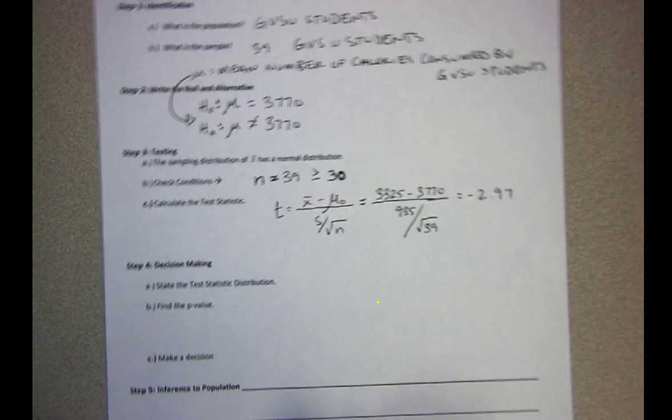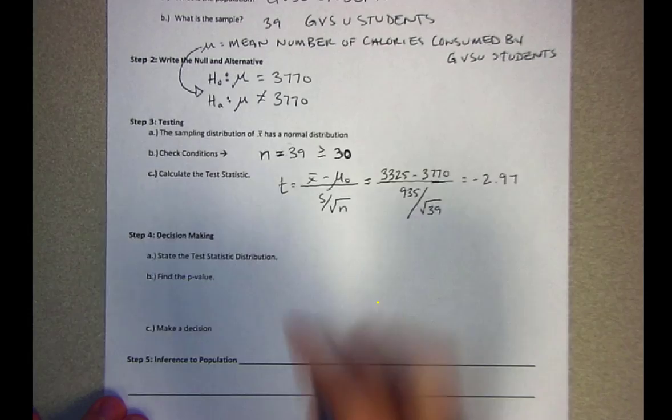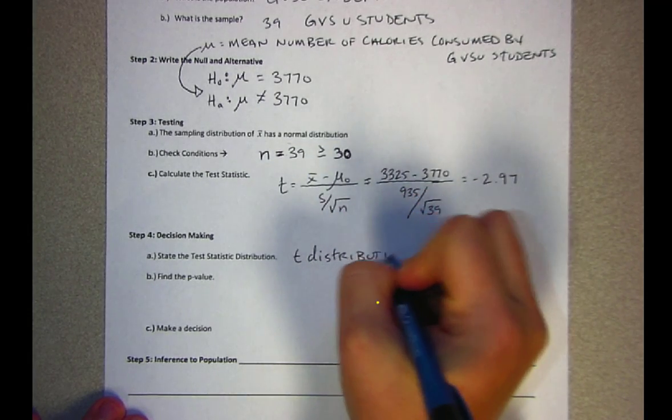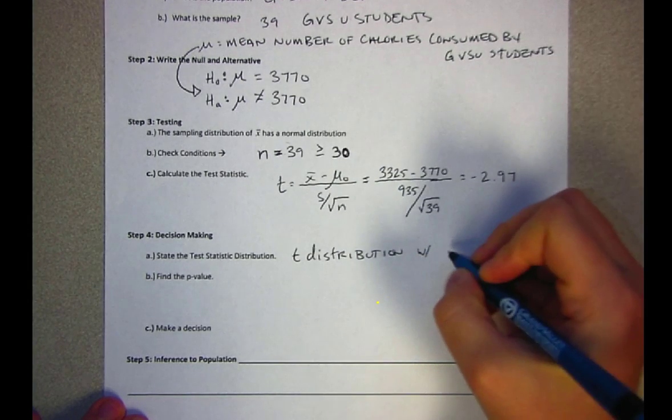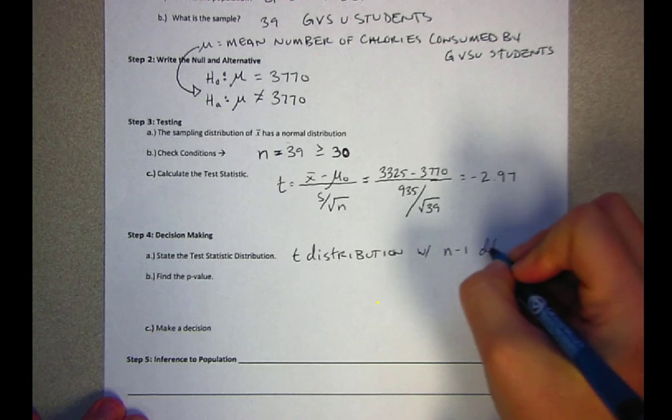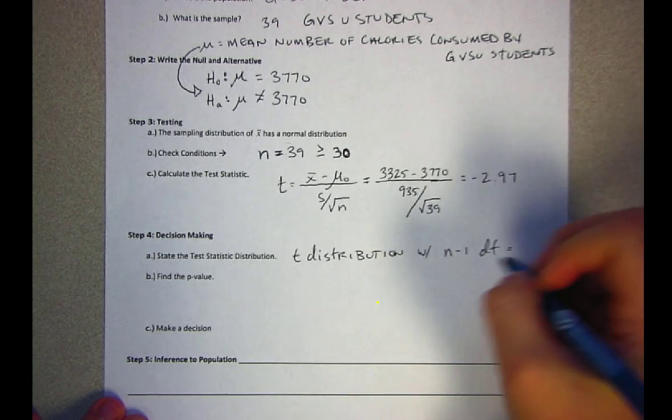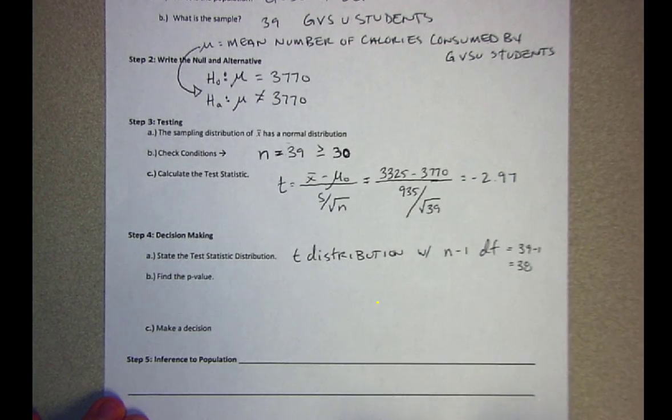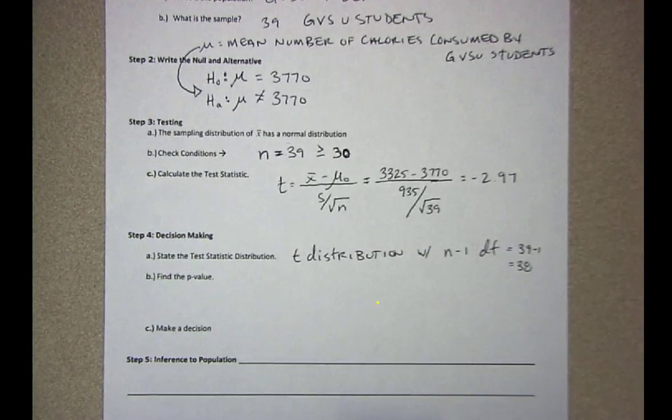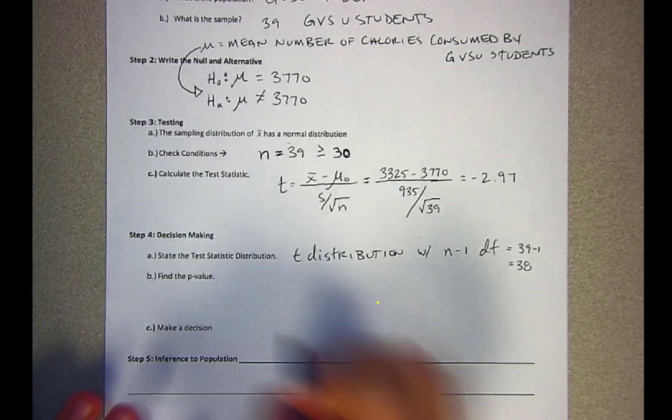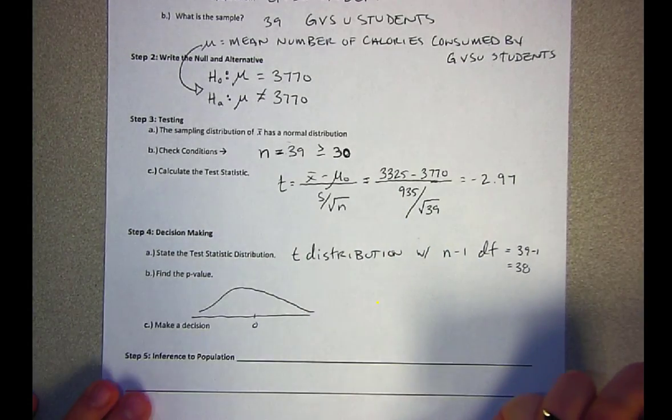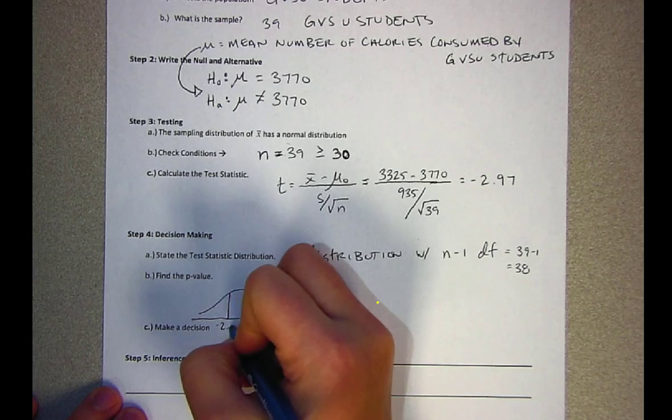Now armed with that information we're going to make a decision in step four. The test statistic distribution is the t distribution with n minus 1 degrees of freedom. Here degrees of freedom is 38. That tells us what curve we're working with. We'll put ourselves on the t curve, centered at 0. Negative 2.97 would put me at this location.